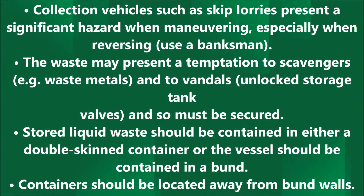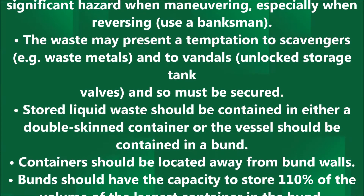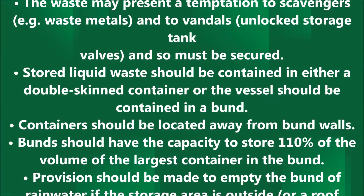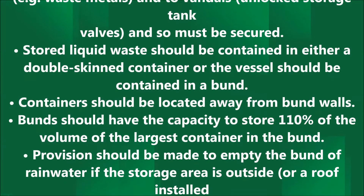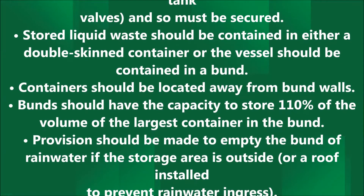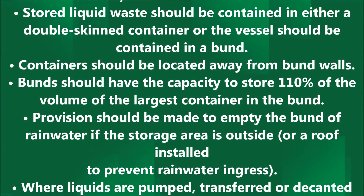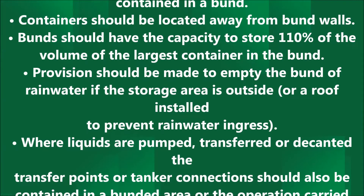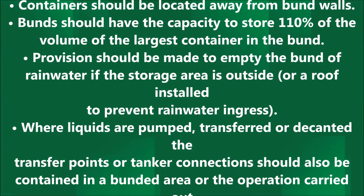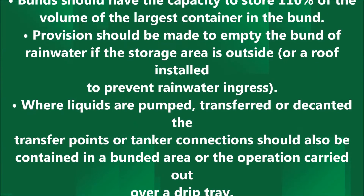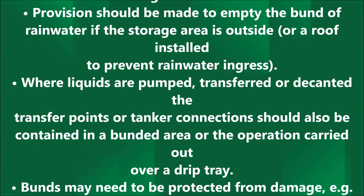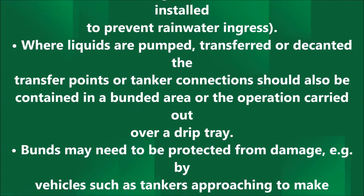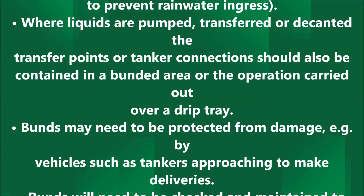Stored liquid waste should be contained in either a double-skinned container or the vessel should be contained in a bund. Containers should be located away from bund walls. Bunds should have the capacity to store 110% of the volume of the largest container in the bund. Provision should be made to empty the bund of rainwater if the storage area is outside, or a roof installed to prevent rainwater ingress. Where liquids are pumped, transferred or decanted, the transfer points or tanker connections should also be contained in a bunded area or the operation carried out over a drip tray.